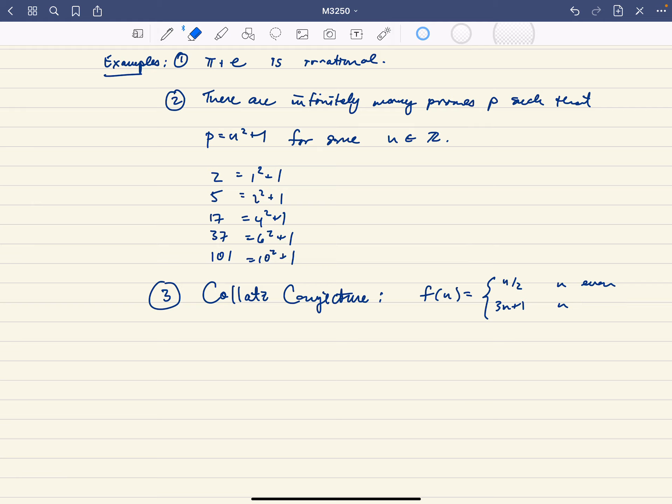And the conjecture says that... actually, let's do one example here. Let's look at 6. 6 is even, so if we divide by 2, we're going to get 3.